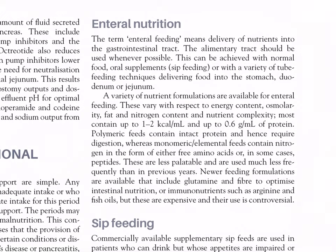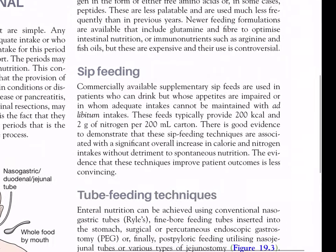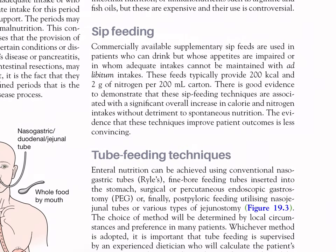Newer feeding formulations are available that include glutamine and fibers to optimize intestinal nutrition, or immunonutrients such as arginine and fish oils, but these are expensive and their use is controversial. Sip feeding: commercially available supplementary sip feeds are used in patients who can drink but whose appetites are impaired. These typically provide 200 kcal and 2 grams of nitrogen per 200 ml carton. There is good evidence that sip feeds are associated with a significant overall increase in calorie and nitrogen intakes without detriment to spontaneous nutrition, though the evidence that they improve patient outcomes is less convincing.